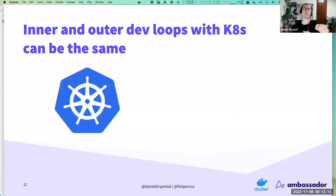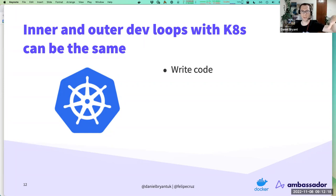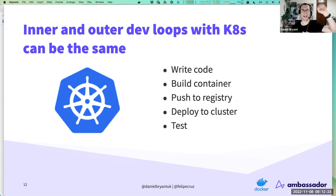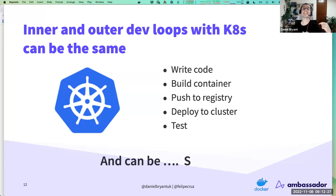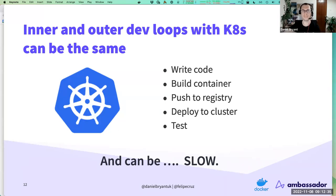Another issue with the full remote model is the inner and outer dev loop can become the same. You write code, build a container, push it to a remote registry, deploy to the cluster, run a test, and repeat. This is slow — like the old days of editing BASIC and re-running. It breaks you out of your fast feedback loop as a developer.